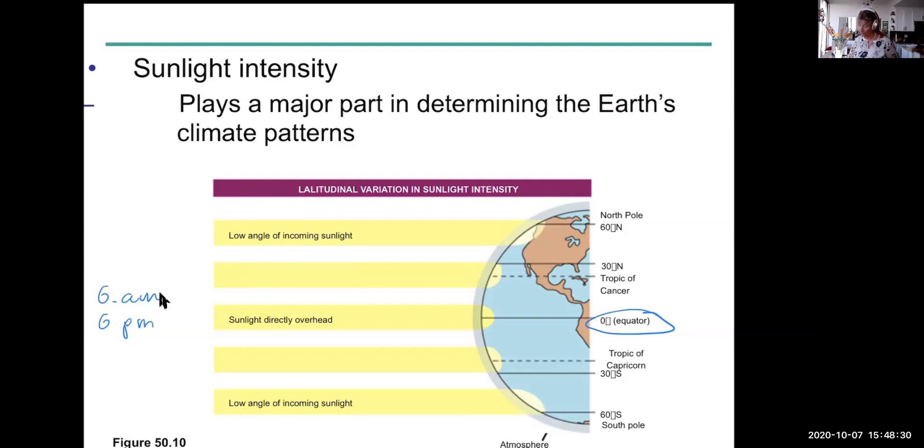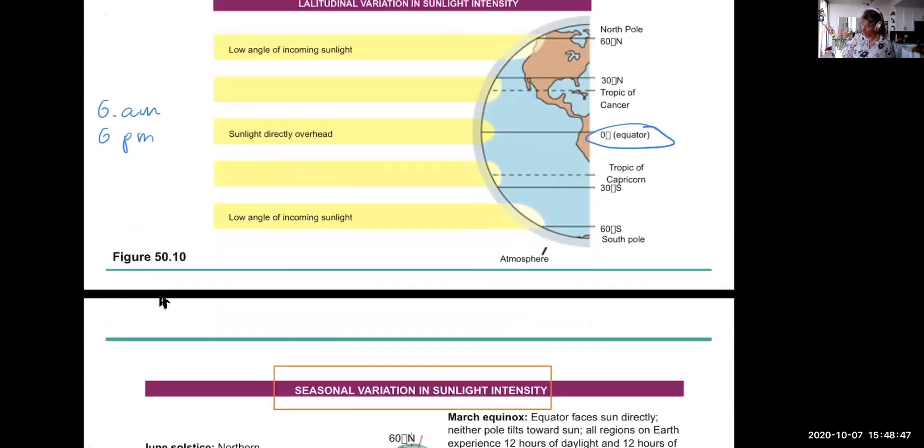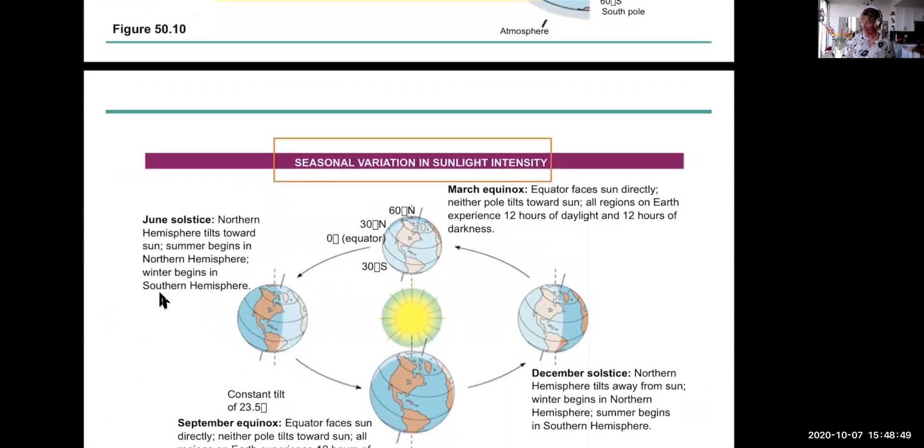So latitudinally, if we go further north, the angle of the sun gets to be more acute, because the sun isn't directly overhead anymore, and also it depends on the tilt of the earth, how severe that angle is.